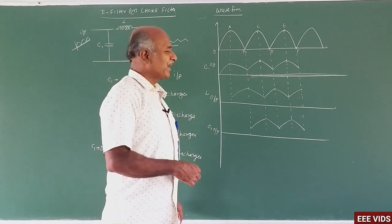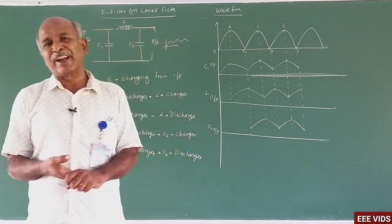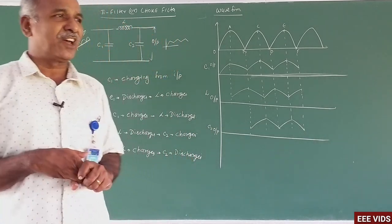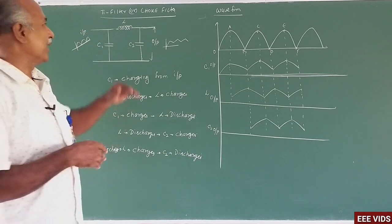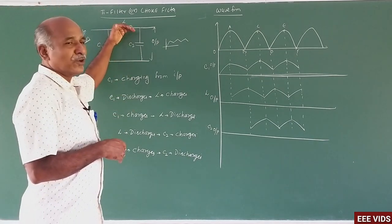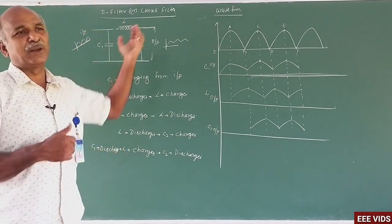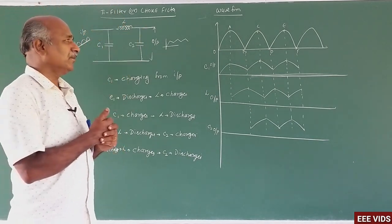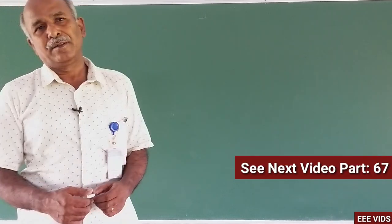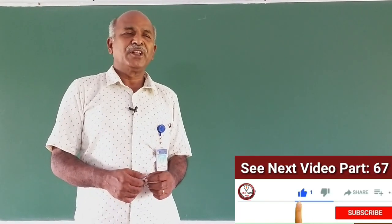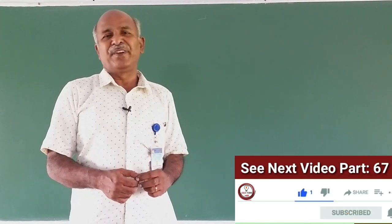This is the pi filter. Practically, we also use the choke filter. Instead of using an inductor choke, we can use a resistance — that is the resistance filter. Now we are going to see the LC filter.